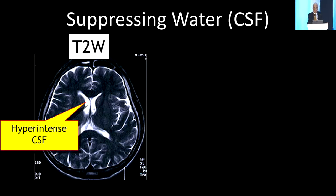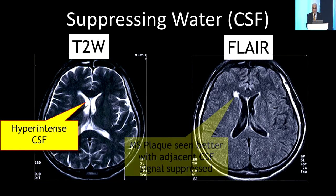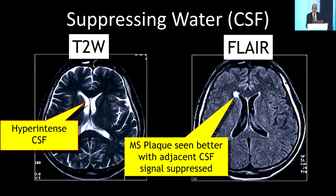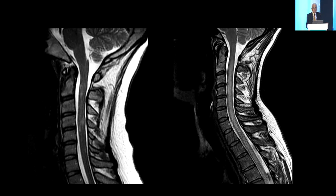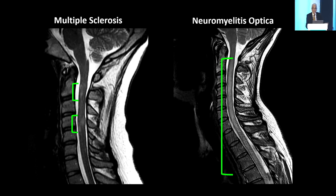Another suppression image suppresses water. This looks like an almost normal T2-weighted image, but if you suppress the ventricular CSF you can see a periventricular MS plaque. FLAIR — fluid attenuation inversion recovery — suppresses CSF and shows brain pathology very well. In optic neuritis, don't forget we sometimes need spinal sequences as well. You can see small segments of spinal cord involvement suggesting multiple sclerosis, or an extremely long segment in neuromyelitis optica (LETM — longitudinal extensive transverse myelitis), helping differentiate the two conditions.